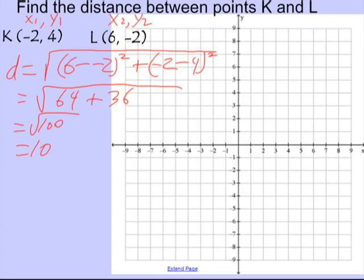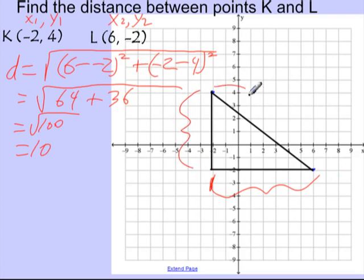Let's see what that looks like on the graph, because it's going to help you to see where this formula comes from and why it makes sense. So, K was at negative 2, 4, and L was at 6, negative 2. And here is the kicker. Watch what I can do with this in the coordinate plane. I can turn this into a right triangle, where the legs of the right triangle are here and here. There's one leg, there's the other leg, and the hypotenuse is the distance. It's the segment between the two points.